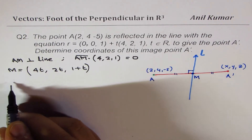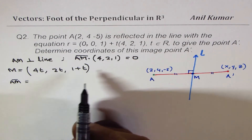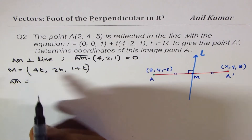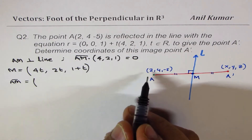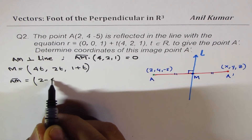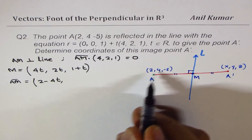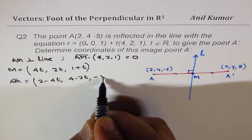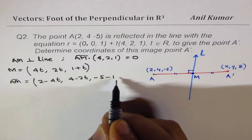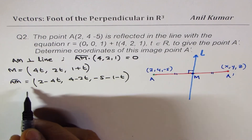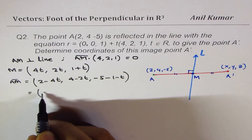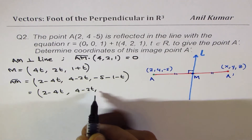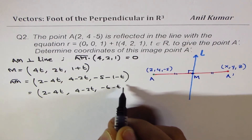Vector AM goes from A(2, 4, -5) to M(4T, 2T, 1+T). So the components are: 2 minus 4T, 4 minus 2T, and minus 5 minus (1 plus T), which gives minus 6 minus T. So AM equals (2 minus 4T, 4 minus 2T, minus 6 minus T).